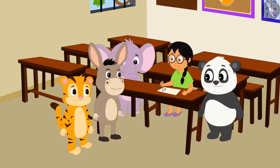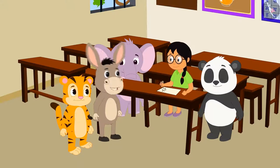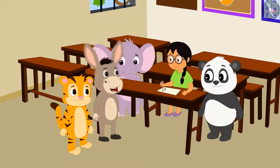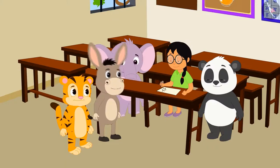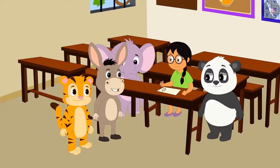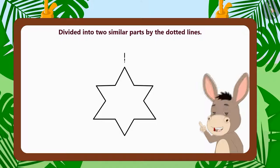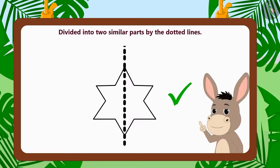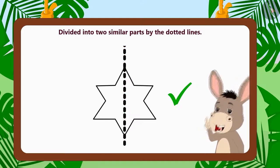Then Bhola explains: There is no magic. There are some alphabets and objects that are made of two similar parts. Therefore, they can be divided into two similar parts by using a dotted line.